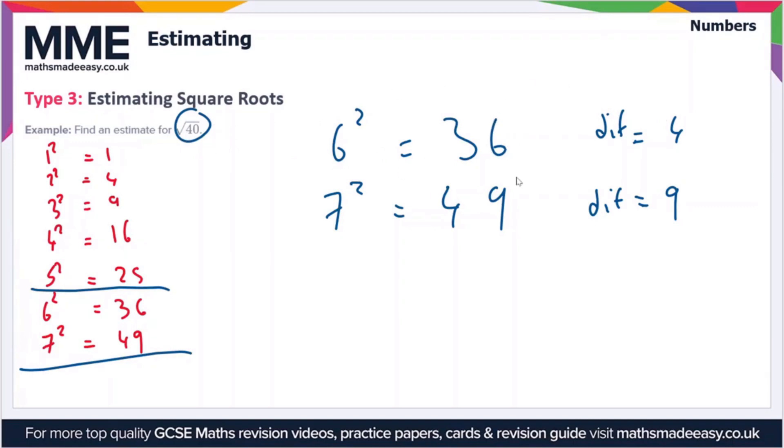Let's come up with an estimate then. The square root of 40 is a bit closer to 6 than it is to 7, so we'll say it's approximately equal to 6.3.